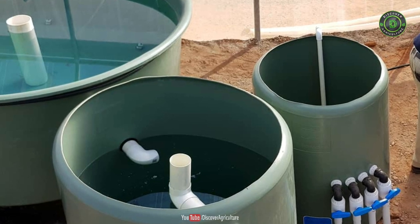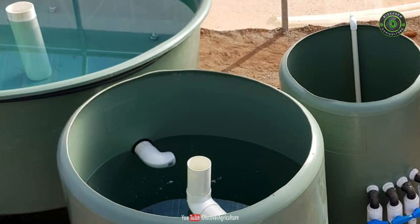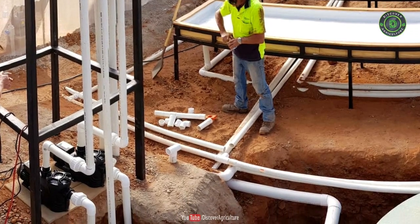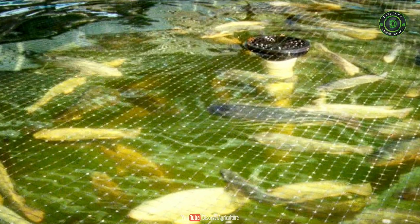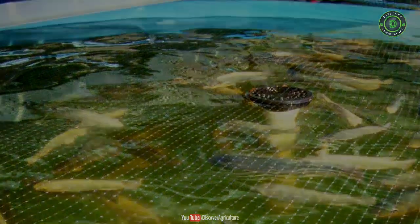The fish waste provides organic food for the growing plants and the plants naturally filter the water in which the fish live. The third and fourth critical, yet invisible actors in this symbiotic world are the beneficial bacteria and composting red worms.